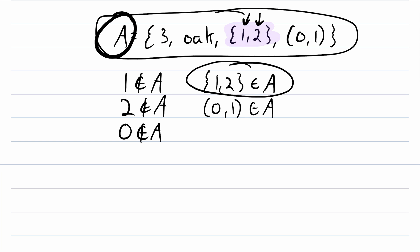you don't assume that the objects in that collection are elements of the set. Again, the set containing 1 and 2 is an element of A, but neither 1 nor 2 are elements of A.